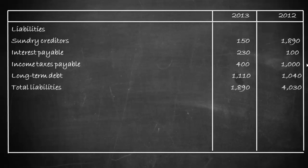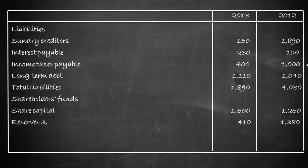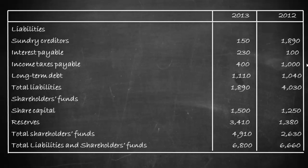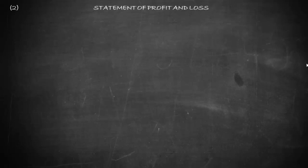Total liabilities came down from 4030 to 1890. On the shareholders' funds side: share capital in 2012 is 1250 whereas in 2013 it is 1500. Reserves in 2012 are 1380 whereas in 2013 they are 3410, a manifold increase. Total shareholders' funds in 2012 is 2630 whereas in 2013 it is 4910, increasing due to both share capital and reserves. Total liabilities in 2012 are 3660 whereas in 2013 they are 6800.